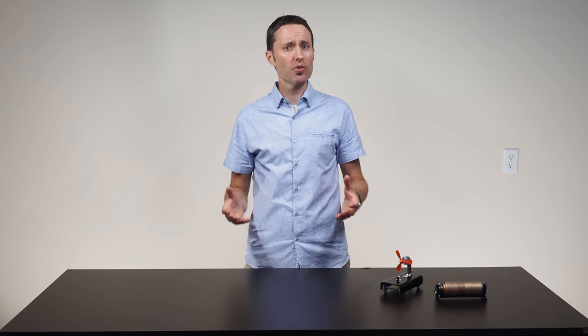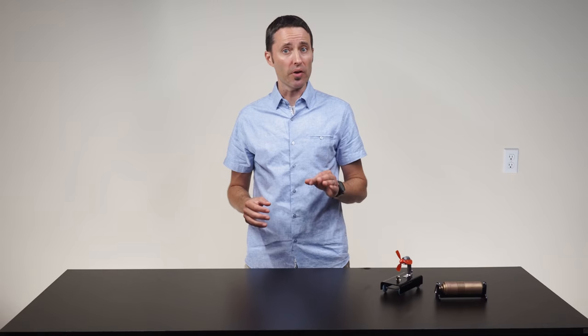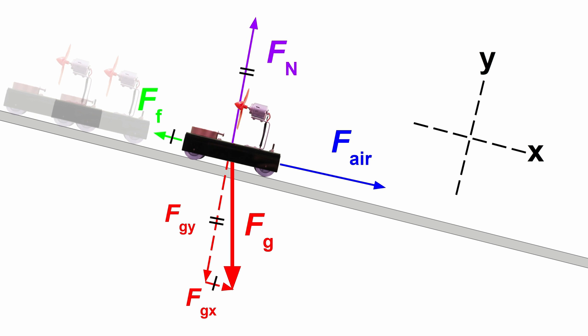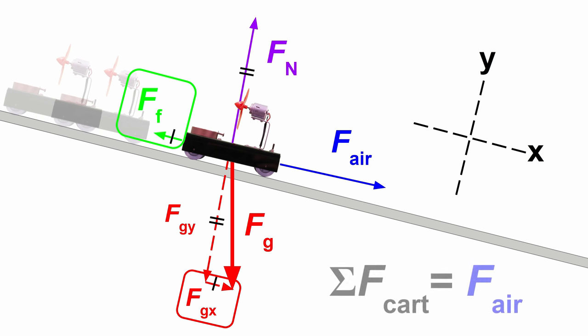During data collection, students will need to change the fan cart's mass and measure or calculate its acceleration. Remind students that the sum of the forces on the fan cart should remain constant throughout the entire lab, so any changes in acceleration are a result only of a change in mass. If you have motion tracks with height adjustments, discuss how a small decline can be used to minimize the effect of frictional forces. Students should adjust the incline's angle until the cart moves at a constant speed after a small push, so that the component of gravity parallel to the incline makes up for the frictional forces. If this is done, the sum of the forces on the fan cart will equal the force on the fan blades by the air.